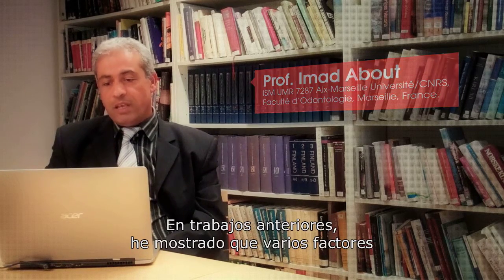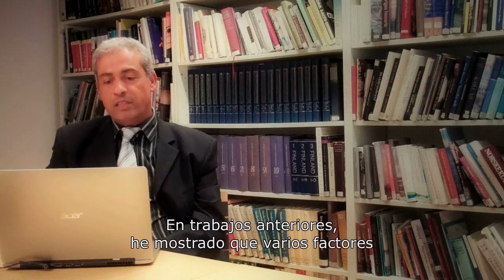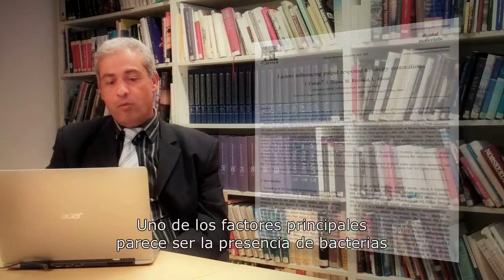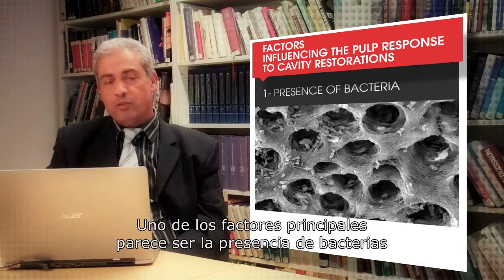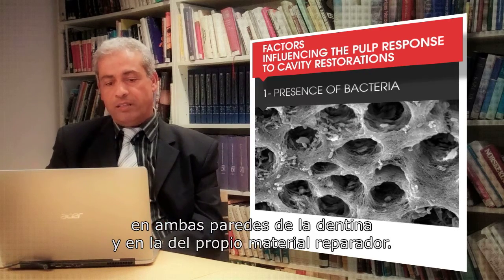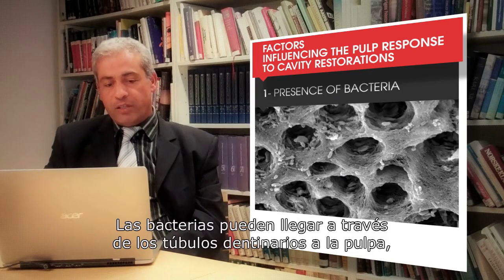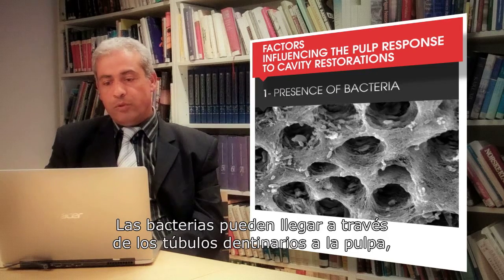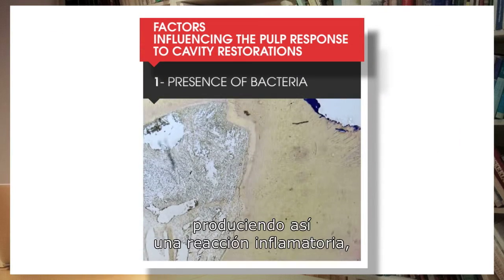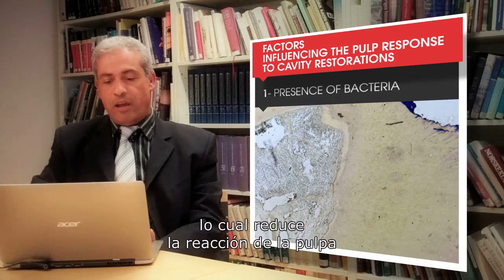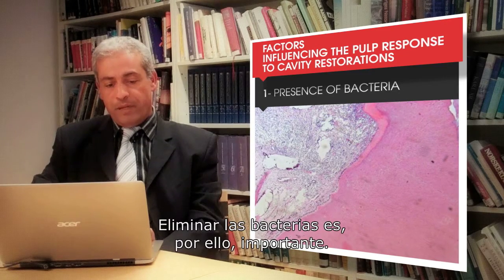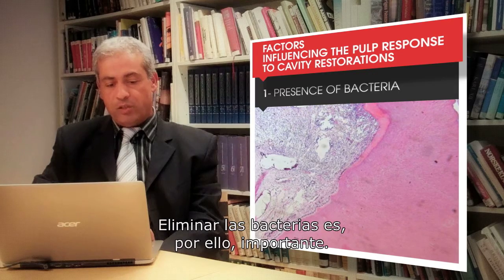Our previous works have shown that several factors affect and influence the success of restorative procedures. One of the main factors appears to be the presence of bacteria along the walls of the dentin and along the restorative material itself. The presence of bacteria may travel through the dentin tubules to the pulp, causing an inflammatory reaction and decreasing the pulp's response to future carious injuries. So eliminating the bacteria appears to be a major element.